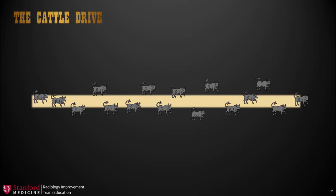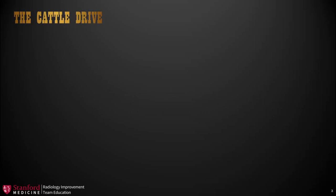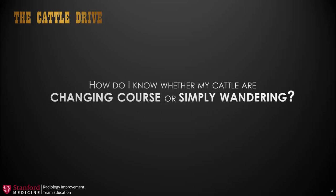The question I had was: how do I know whether my cattle are changing course or simply wandering? Because if they're changing course, I need to react and help them stay on the path. But if they're simply wandering, maybe I can just leave them alone and let them continue forward in the cattle drive.